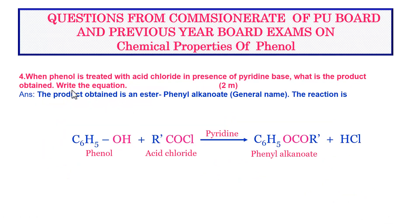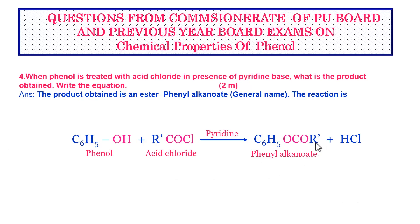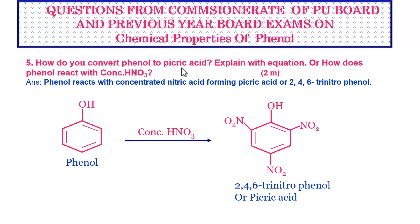Next question: when phenol is treated with acid chloride in presence of pyridine base, what is the product obtained? Write the equation. This is a two-mark question. This is taken from the esterification reaction. The product obtained is an ester, namely phenyl alkanoid. The reaction: C6H5OH + RCOCl (acid chloride) in presence of pyridine base gives C6H5OOCR (phenyl alkanoid) along with HCl.